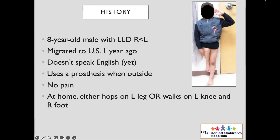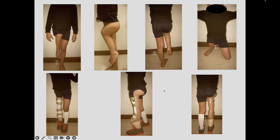This was an eight-year-old boy who presented in my previous practice with a leg length difference. He had recently migrated to North America about a year ago, didn't speak much English yet, was using a prosthesis when outside, didn't have pain, and at home would either hop on one leg. These are his clinical pictures — you can see he has a congenital shortening primarily related to a congenitally short femur with a flexion deformity at the knee, but he has a very functional, viable foot.